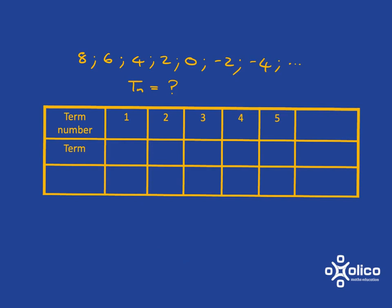Okay, I want you to figure it now. If you have a pattern that goes 8, 6, 4, 2, 0, negative 2, negative 4, etc., what will term n be? Pause the video and try.